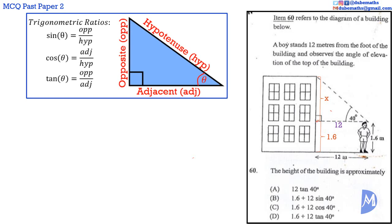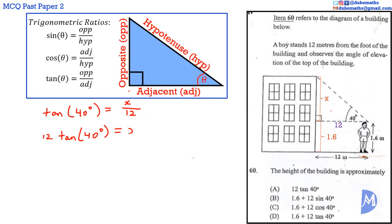We can use the tangent ratio: tan θ = opposite over adjacent. Therefore, tan 40° = X / 12. Making X the subject, we multiply both sides by 12: 12 tan 40° = X, or X = 12 tan 40°. The height of the building is 1.6 + 12 tan 40°. The answer is D.